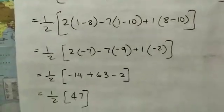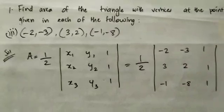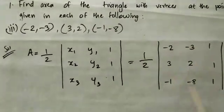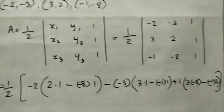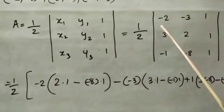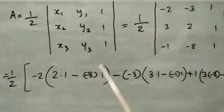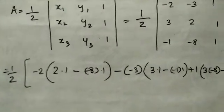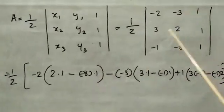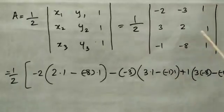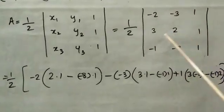The answer for problem 2 is 47/2, and problem 1 is 16. Now problem 3: similarly substituting x1, y1, x2, y2, x3, y3. We have 2 into minus 3 into minus 8, and 3 into 1 minus 1 into 1, plus 1 into 3 into minus 8 minus 1 into 2.